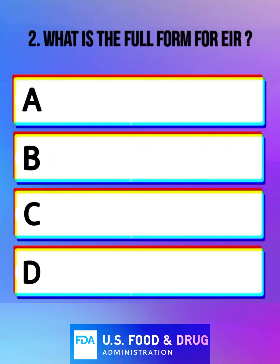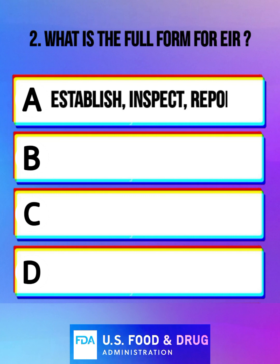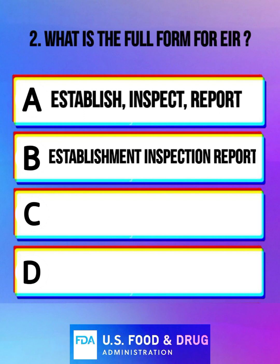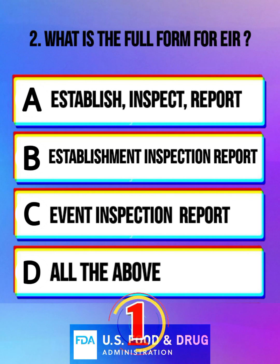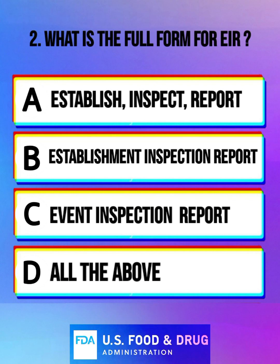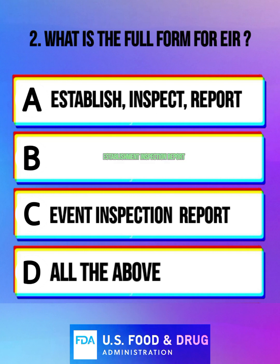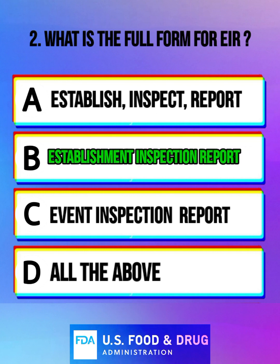What is the full form of EIR? Option A: establish, inspect, report. Option B: establishment inspection report. Option C: even inspection report. Option D: all the above. The correct answer is establishment inspection report.